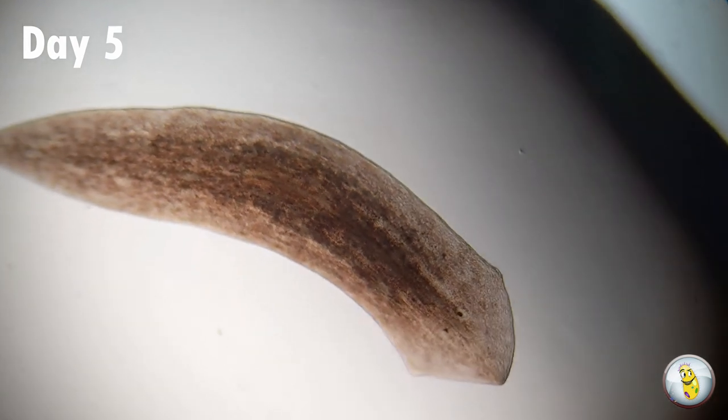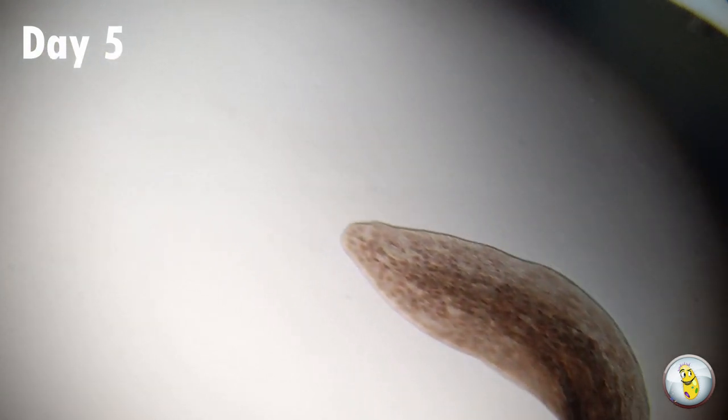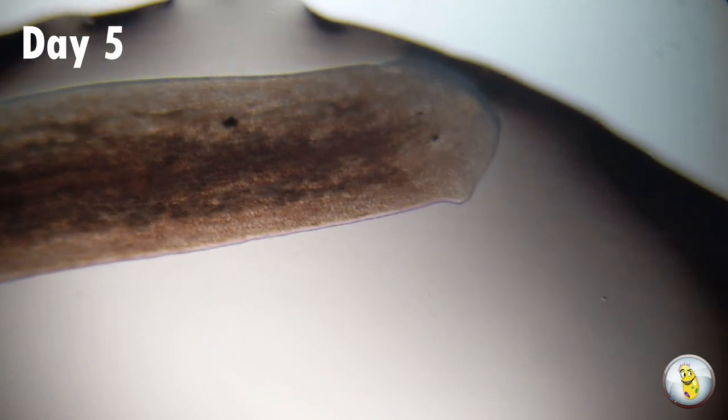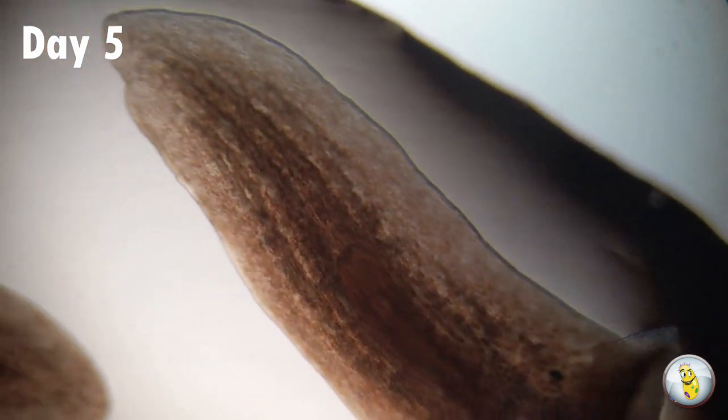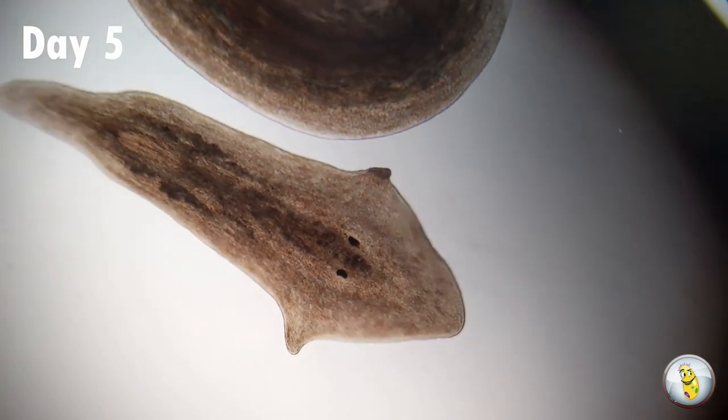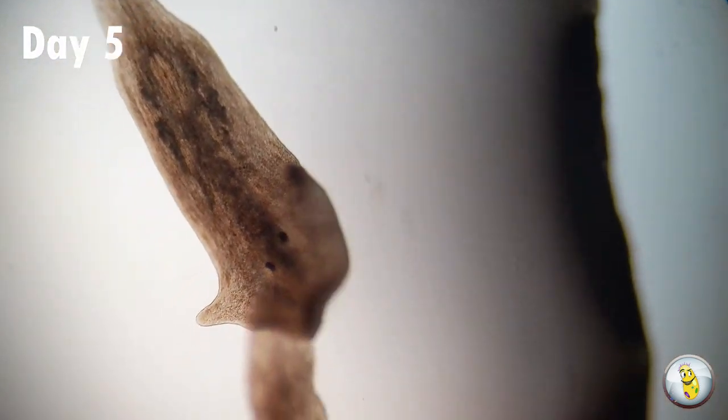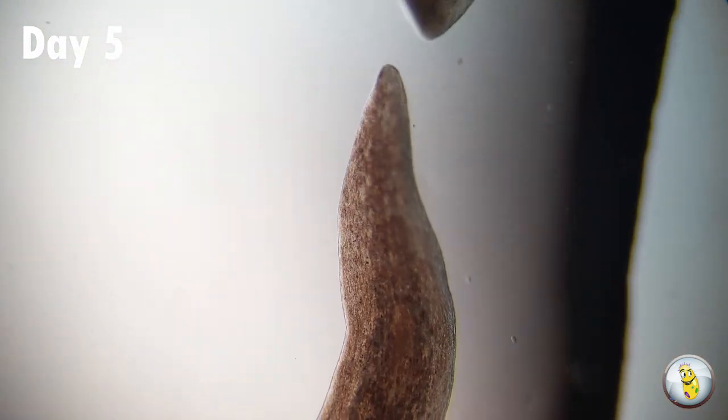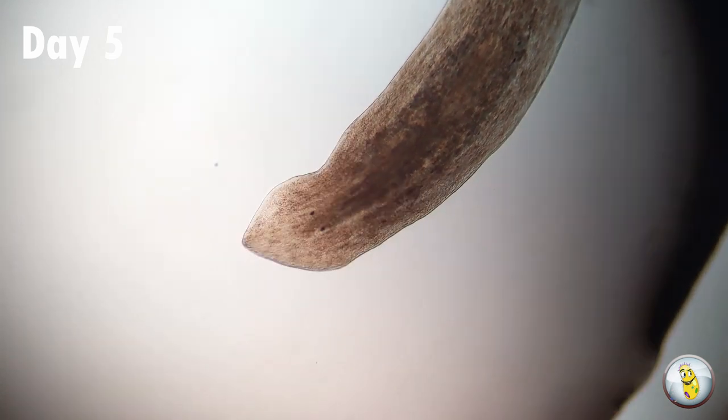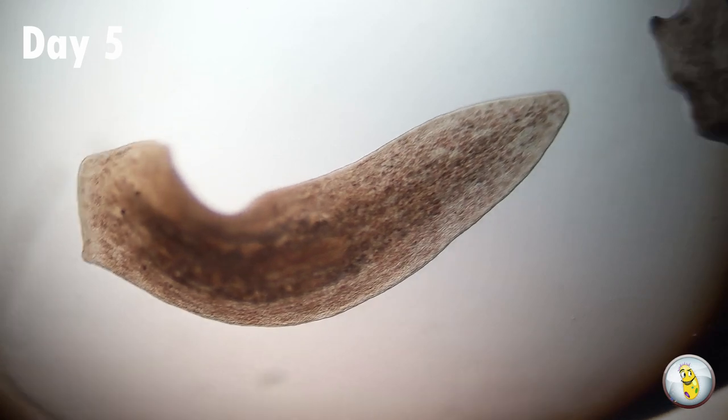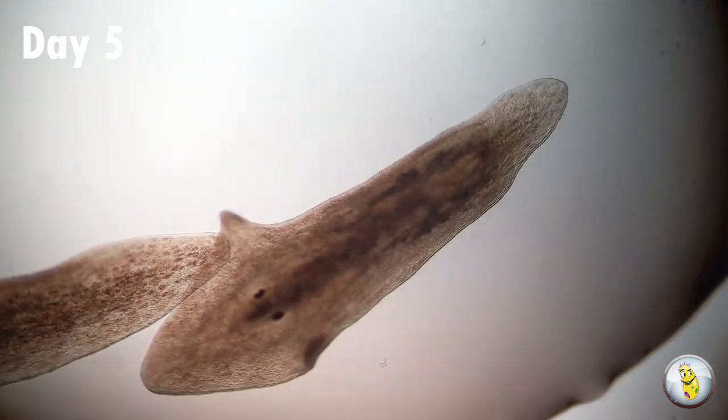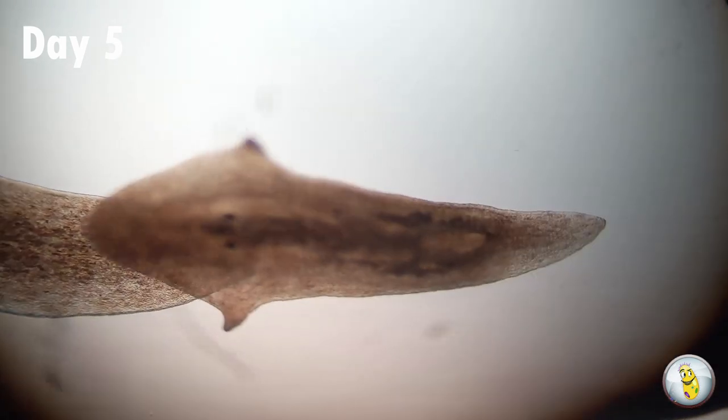And here we are, only five days after the bisection. That was the tail that we were looking at, and this is the middle section. Both have clearly defined heads and very small eyes that have developed. That's the head, and this is the tail again. Let's just watch now as the tail makes its way around the bottom of this water droplet, pursued by the head, and they'll both meet back up with the body.